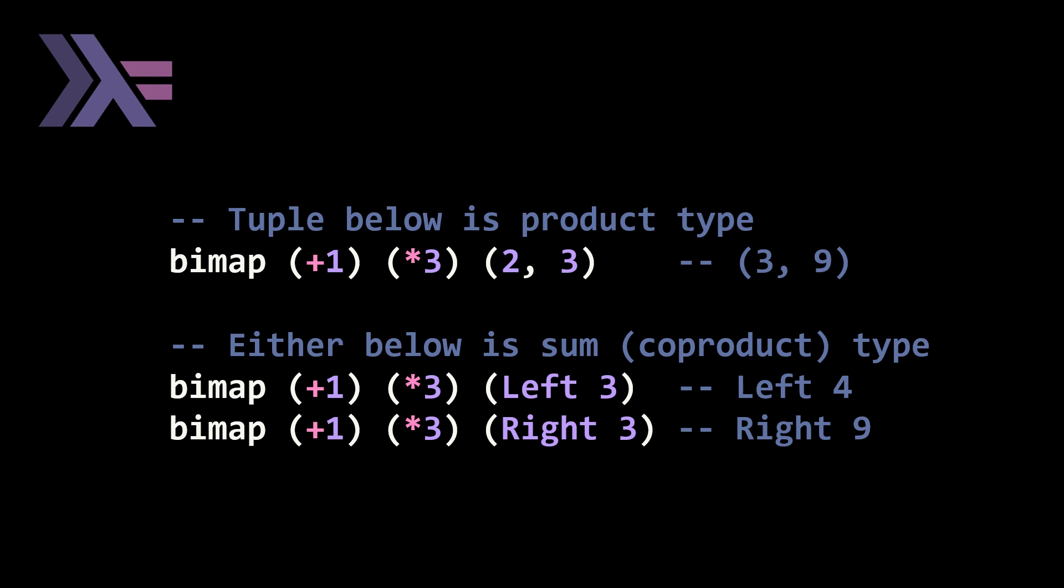And for the bimap that's applied to an either type, with the same f and g functions plus one and times three, for a left three, you end up with three plus one is equal to four. And for a right three, you end up with three times three, which is equal to nine. So hopefully walking through these two examples of applying bimap with two unary functions to both a two tuple or a pair and an either makes it clear what a bimap is doing. A bimap is just two functors combined together.